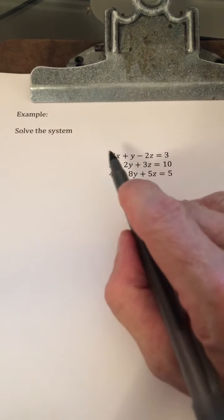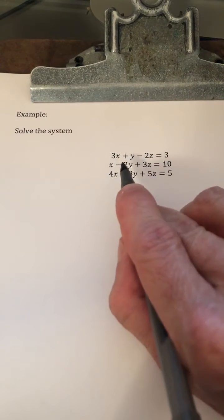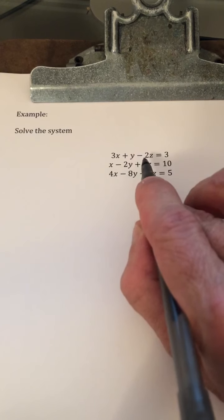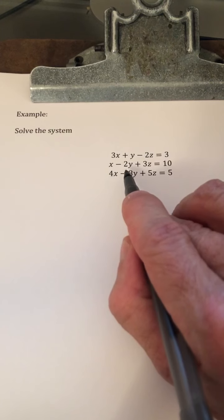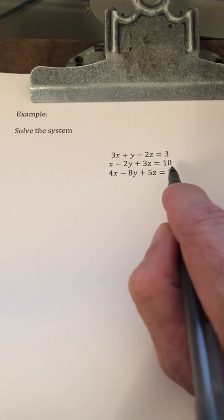We want to solve the system 3x plus y minus 2z equals 3, x minus 2y plus 3z equals 10.